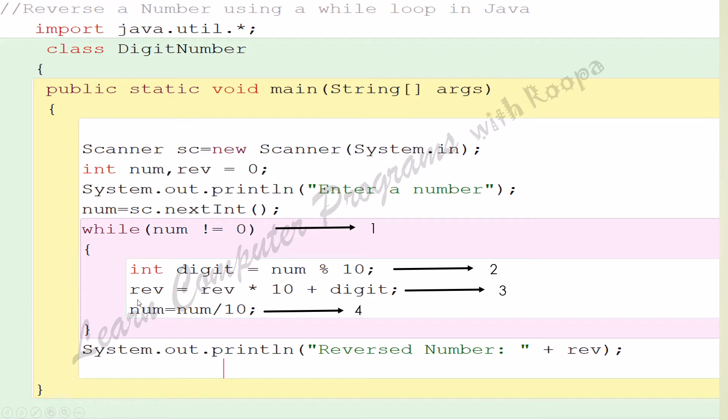But here, if you observe in the second line, we have reverse equals reverse times 10 plus digit. So this is the change we are going to make to get the entire reverse number instead of individual digits.